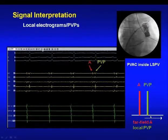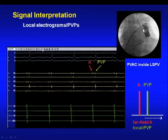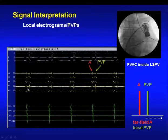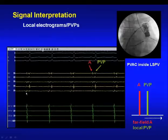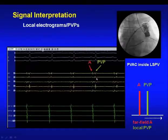By placing the PVAC just one centimeter deeper into the left superior pulmonary vein, you create a considerable conduction delay. You now see two components of the electrogram: the first, slightly smoother component coincides with left atrial activation — a far-field signal — and a second sharp, delayed potential, which is the pulmonary vein potential. This signal should be gone after ablation.